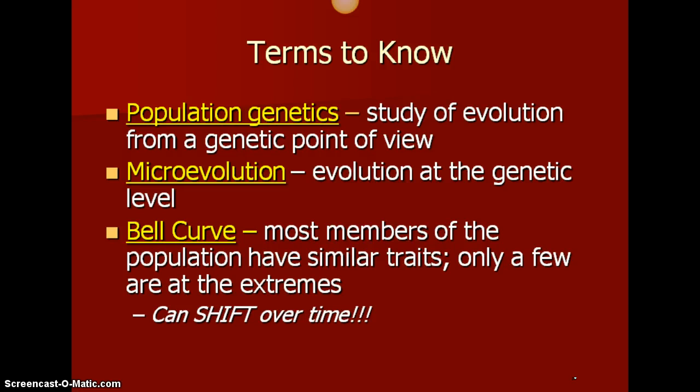Most members of the population will have similar traits — most of them will be kind of in the middle, with a similar genetic set of traits. Only a few of these individuals are going to be at the extremes. That bell curve can shift from one side to the other, and we'll look at that in a later section.